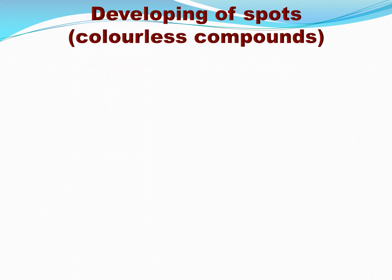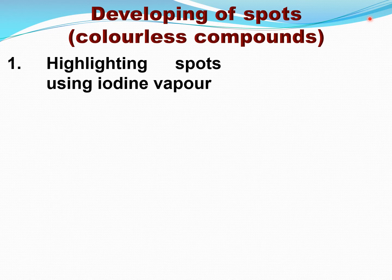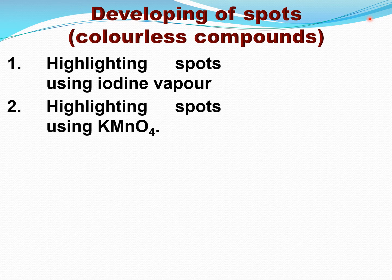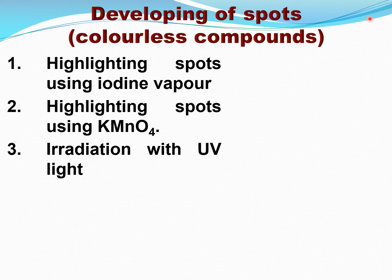If the compounds are colorless, we need to develop the spots to observe them. We can highlight the spots using iodine vapor, which gets deposited on the organic compounds and gives a visible color. Or we can use potassium permanganate, which also gives a color. Alternatively, we can irradiate with UV light and view with special glasses to see a blue color on the spots.